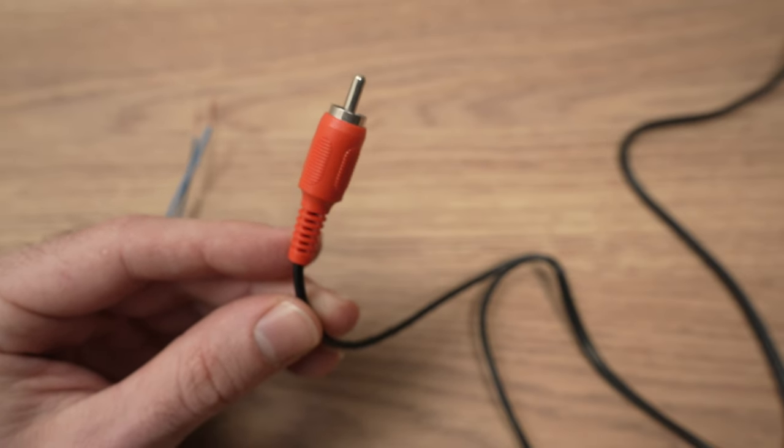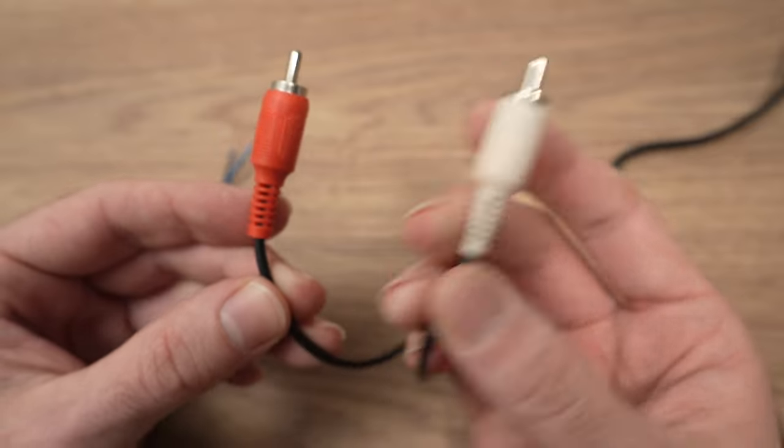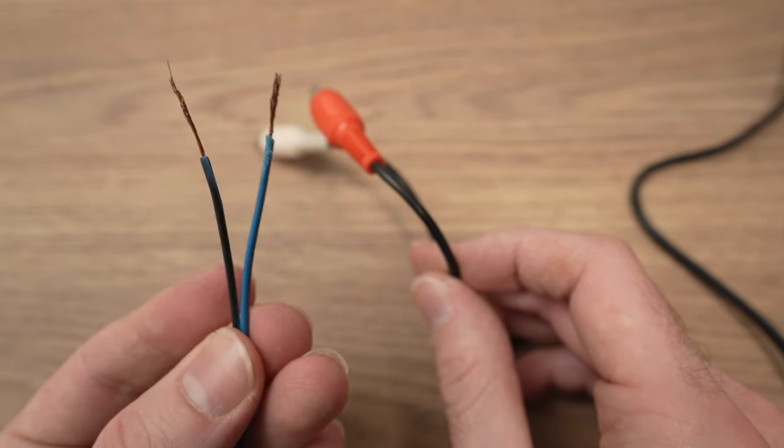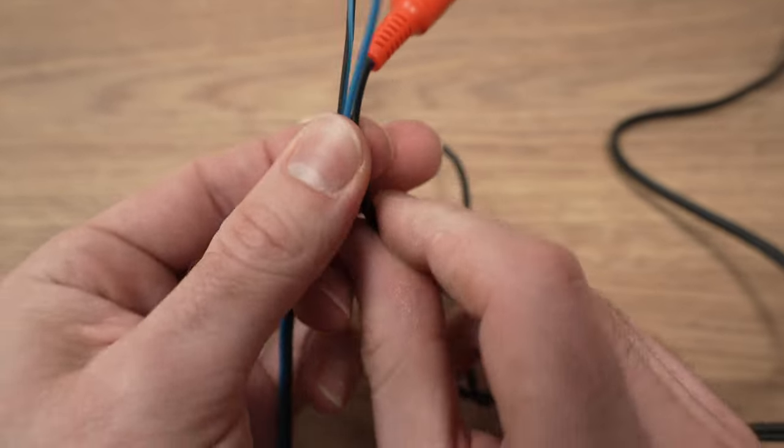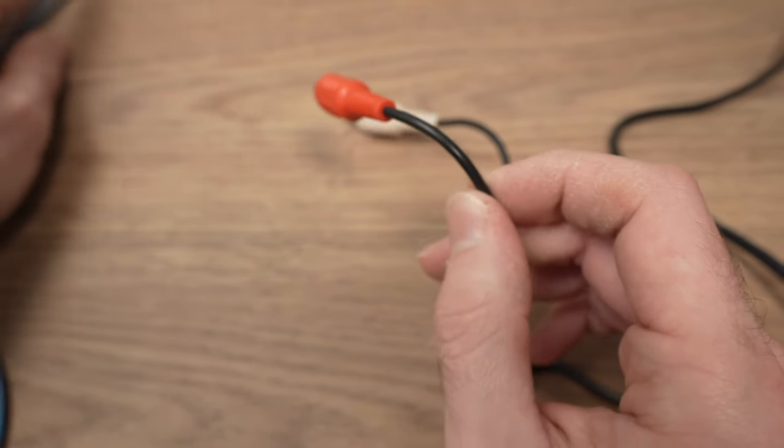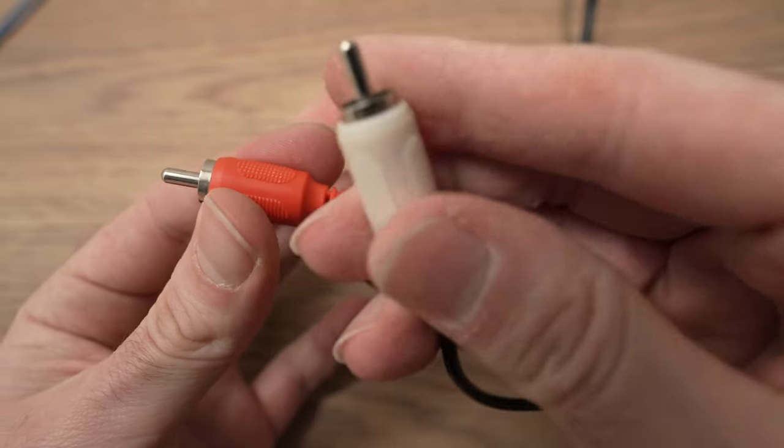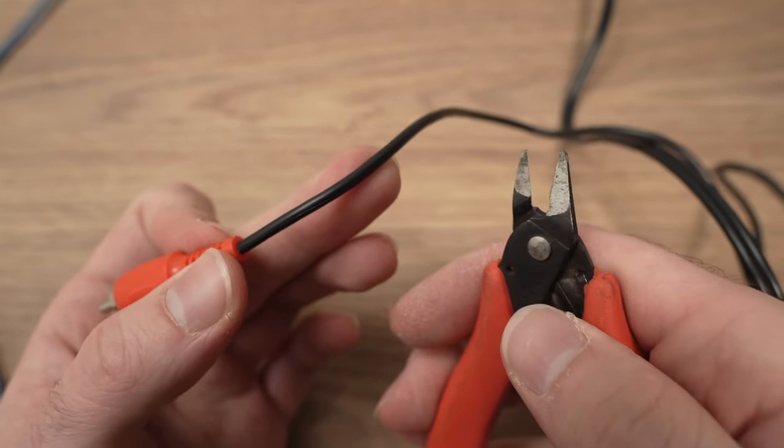In each of these RCA connectors or cables there are two cables. So in each of these there is two. Let me show you. I'll take this red one but honestly it does not matter. You can take the white one as well.